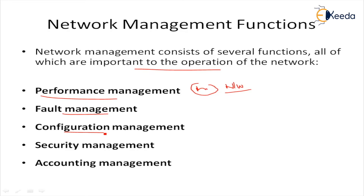Third is configuration management. Configuration management deals with the set of functions associated with managing orderly changes in the network. The basic function of managing equipment in the network belongs to this category. This includes tracking equipment in the network and managing the addition or removal of different components, including rerouting of traffic and any additional routing requirements.